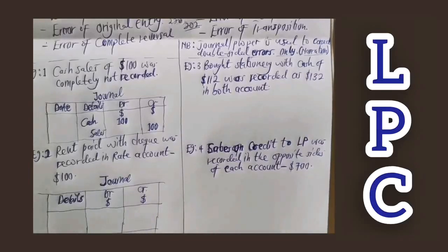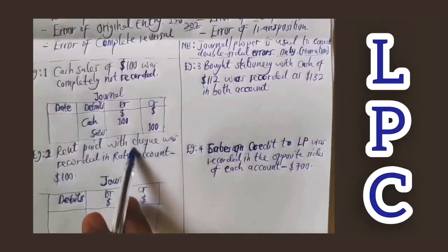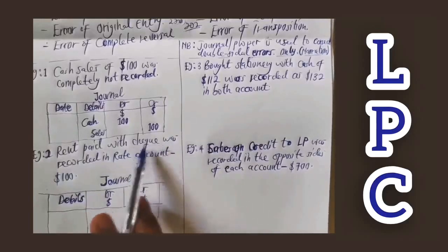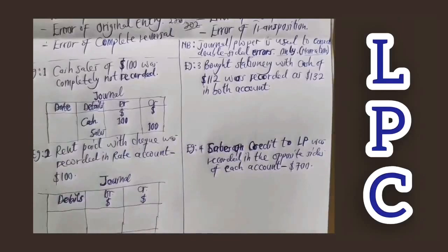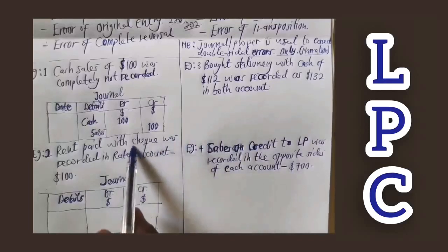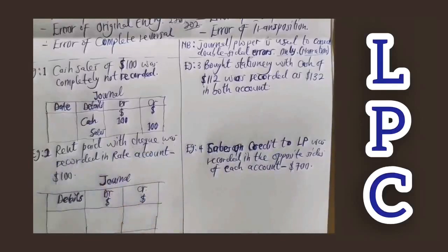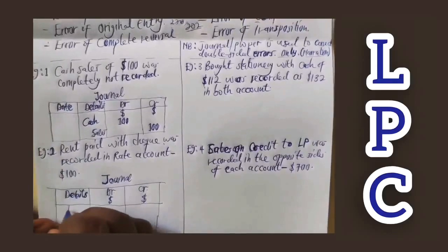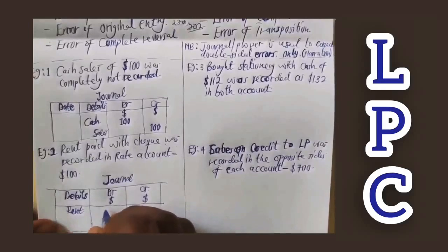To correct this error, first record the item in the correct original account. Rent was paid by check, so the bank account is credited because money is going out from the business. Rent is the expense coming in, so rent is debited. The correct entry should be: debit rent account, credit bank account — both with $100.